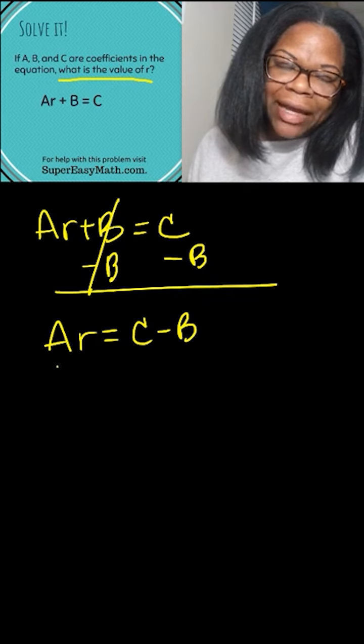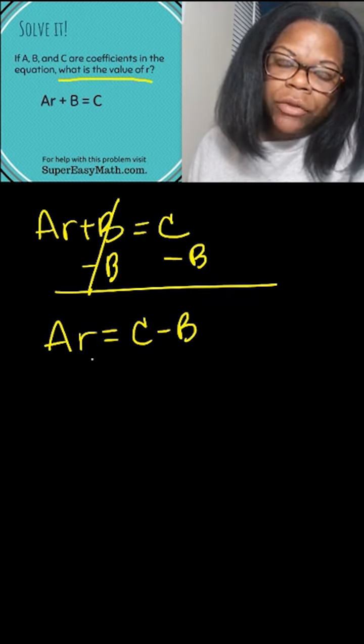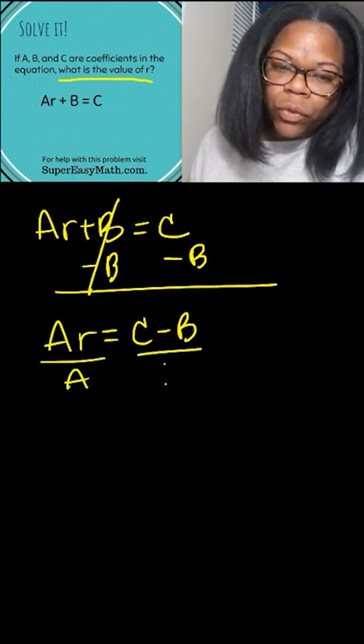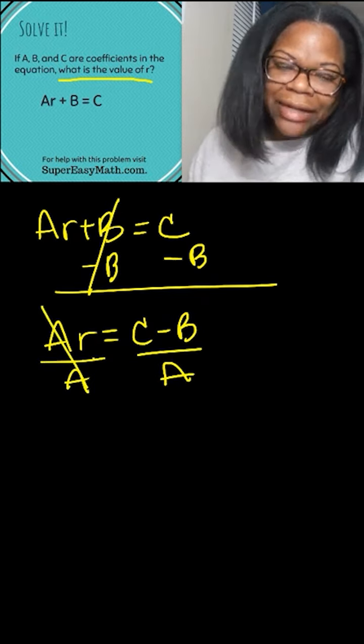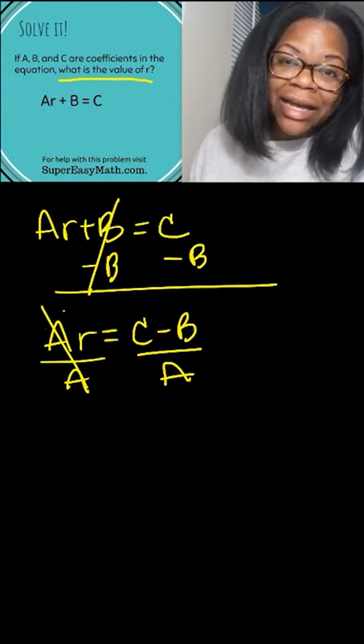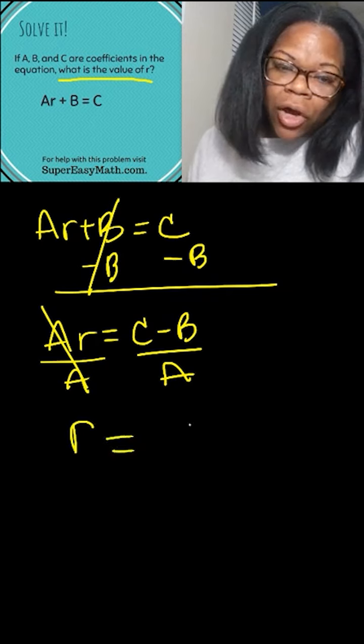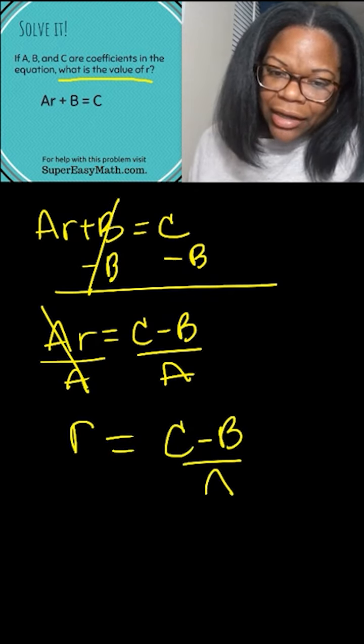Now the relationship between A and R is multiplication. So the opposite of that would be division. So that means I need to divide by A on both sides in order to move the A. I cross that off. So that means only on this side, on the left side of the equal sign, I'm left with an R. And so R equals C minus B all over A.